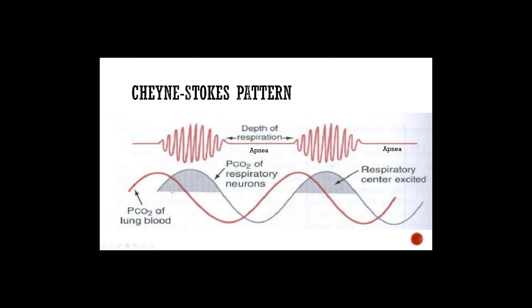As Cheyne-Stokes is occurring, we're going to have challenges with respiration and problems with gas exchange — carbon dioxide and oxygen at a cellular level and within the alveoli. The patient could be conscious and may not realize they're doing this. You're going to come on scene, observe this pattern, and when you try to count the respiratory rate, you'll realize there's a gap.